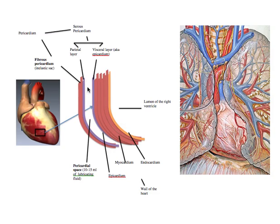Beyond the heart wall, there is a small space filled with about 10 to 15 milliliters of lubricating fluid. Then there is the pericardial sac. So we have the wall of the heart, then a small space, and then the pericardium.